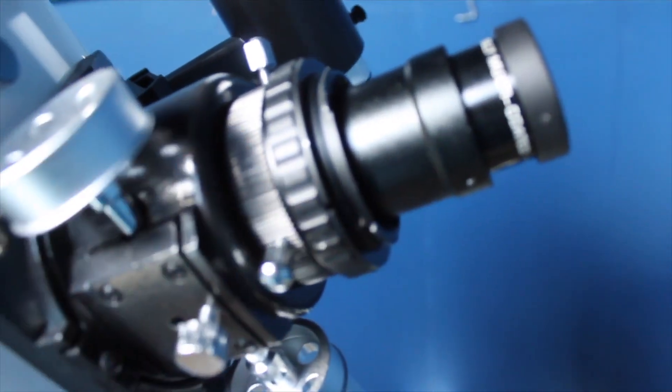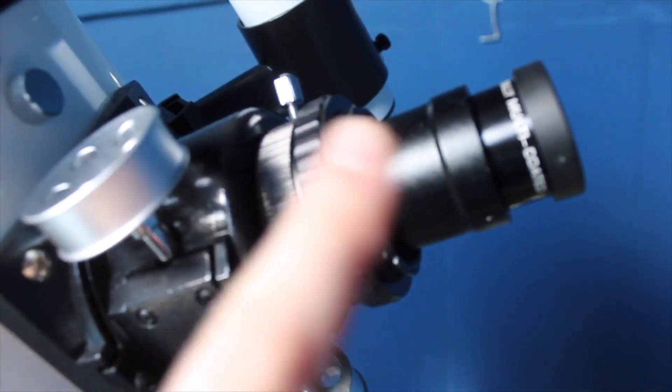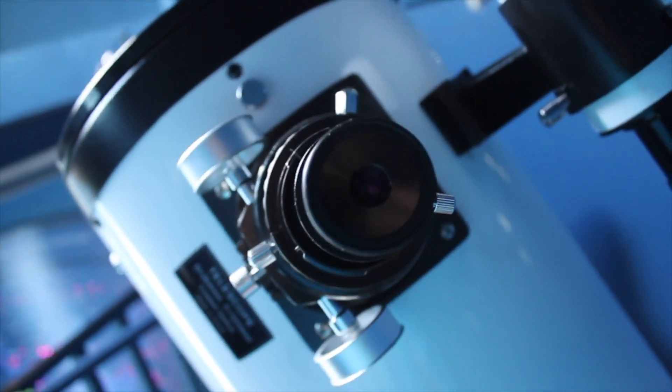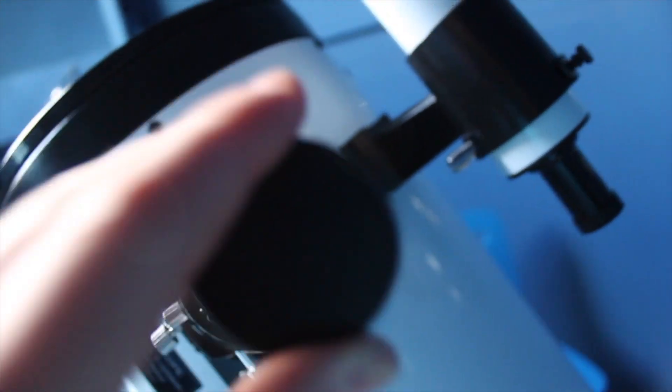This T-ring attaches onto my camera that I'm using right now to attach onto the telescope to take astrophotography. And this is the eyepiece where you look through to see the object you've tracked.